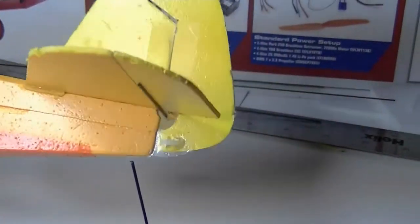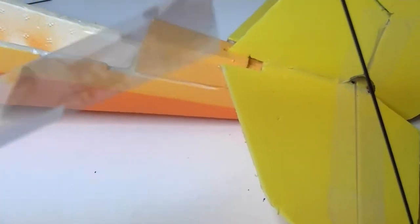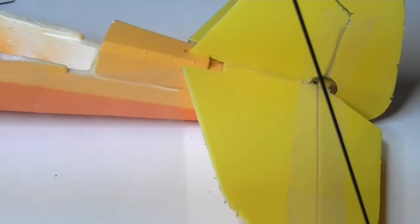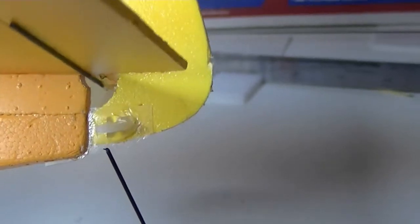I used a piece of this overhead projector plastic, just cut off a little strip, then slit the back end of the fuselage right here and CA'd that little piece of plastic in there to act as a hinge. I think you can see it right there. That gives it a little more support.